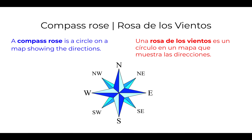A compass rose is a circle on a map showing the directions. Una rosa de los vientos es un círculo en un mapa que muestra las direcciones.